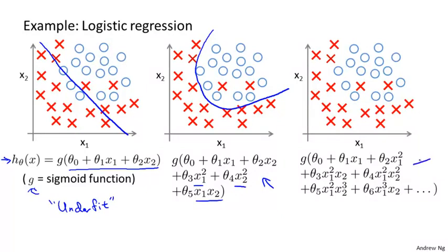And finally at the other extreme, if you were to fit a very high order polynomial, if you were to generate lots of high order polynomial terms as features, then logistic regression may contort itself, may try really hard to find a decision boundary that fits your training data, or go to great lengths to contort itself to fit every single training example well. And if the features x1 and x2 are for predicting maybe cancerous malignant or benign breast tumors, this really doesn't look like a very good hypothesis for making predictions. And so once again, this is an instance of overfitting and of a hypothesis having high variance and being unlikely to generalize well to new examples.